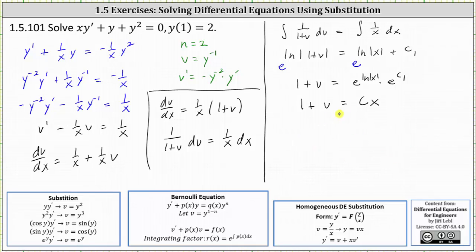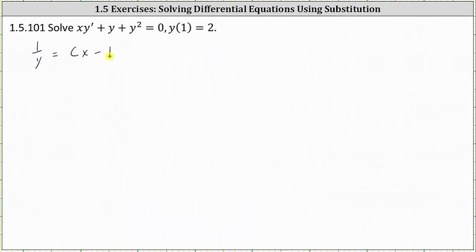For the next step, we subtract 1 on both sides to solve for v. Now we replace v with y to the power of negative 1, giving us 1 over y equals cx minus 1. If 1 over y is equal to cx minus 1, we can solve for y by taking the reciprocal of both sides of the equation, which gives us y equals 1 over the quantity cx minus 1.